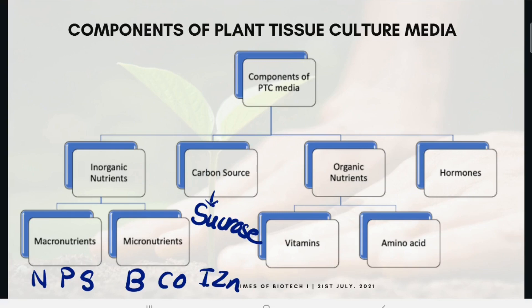Next comes organic nutrients, which are divided into vitamins and amino acids. Vitamins are required for metabolic processes as a co-factor or part of an enzyme — a common example being thiamine. One of the most common amino acids utilized is glycine.